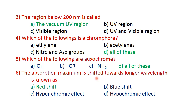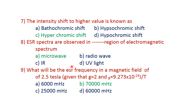The absorption maximum shifted towards the longer wavelength is known as redshift. Absorption maximum, lambda max, shifted to higher wavelength — that is redshift. Option A is correct. Question number seven: intensity shifted to higher value, that is the epsilon max value — it is called hyperchromic shift.